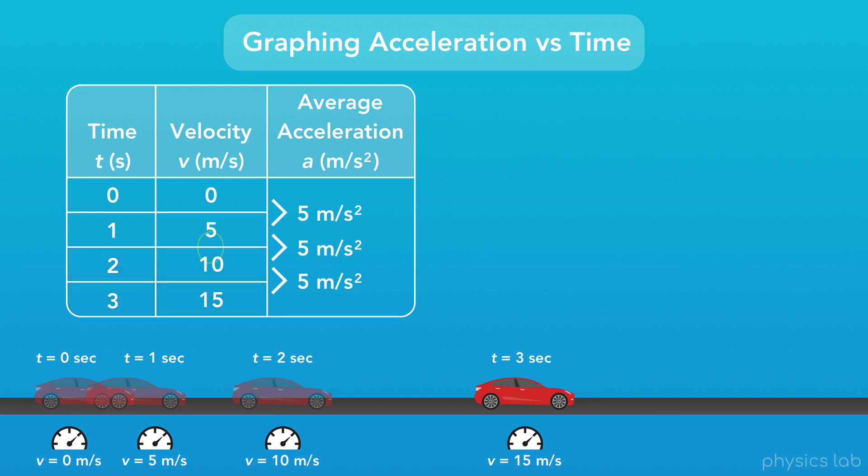So we can see that the velocity is increasing over time, but the acceleration of the car stays the same. And that makes sense. The car has some acceleration, and acceleration is the change in velocity over time. So the car's velocity changes over time.